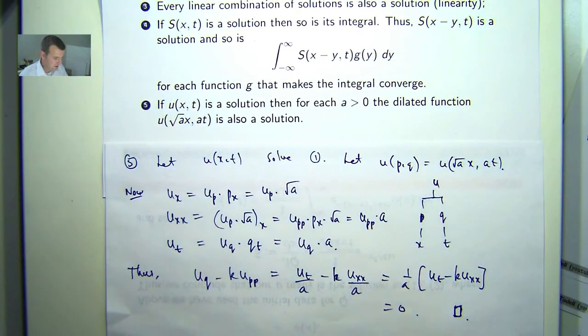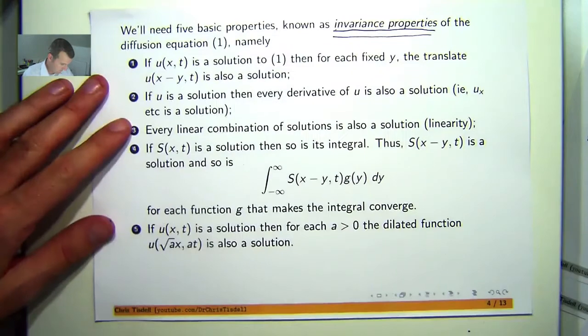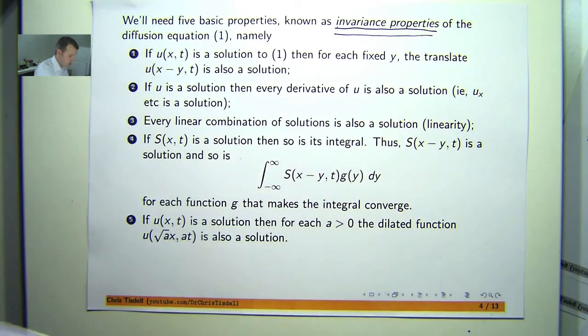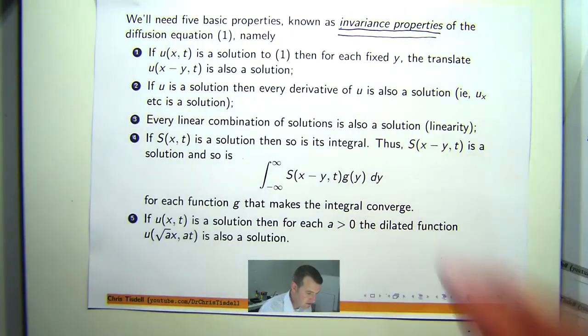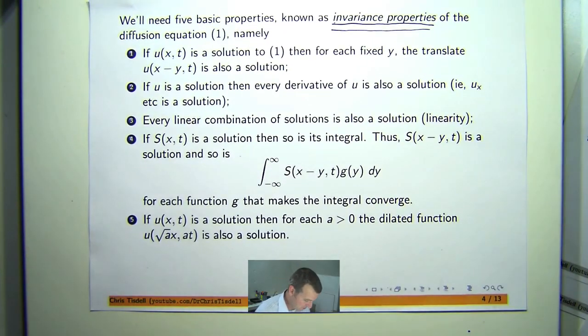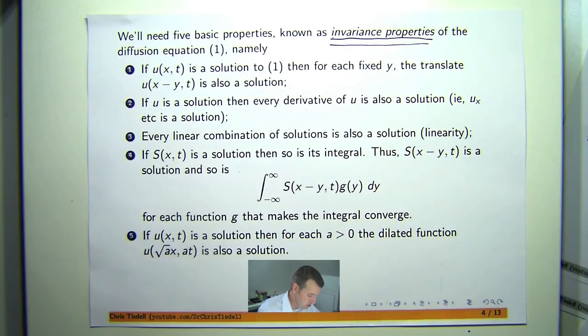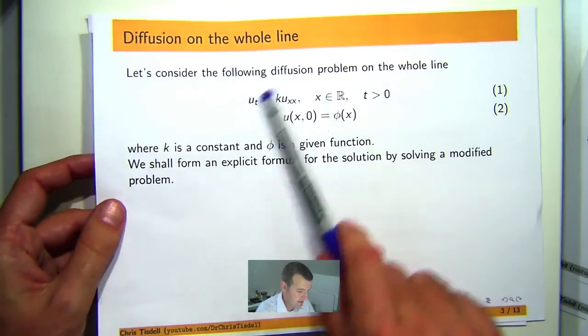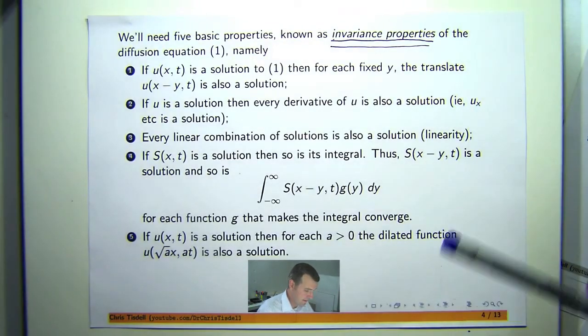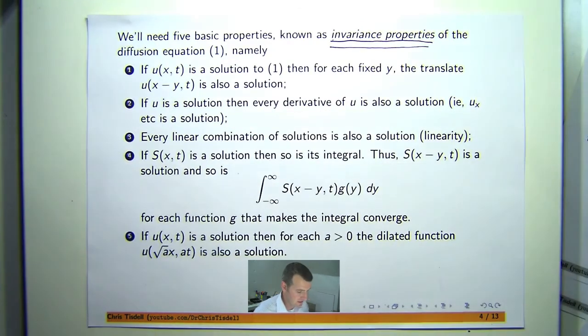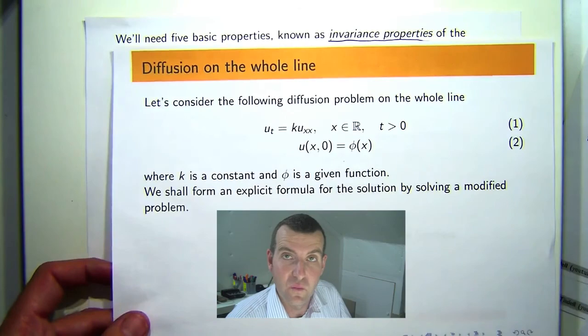So there are five important properties of the diffusion equation. Now we're going to use each of those five properties in forthcoming videos to actually produce the solution to this problem. So as you can see, most of the ways of proving this just involves either the chain rule or Leibniz rule for differentiating under integral signs. So please join me for the next video where we actually solve 1 and 2.